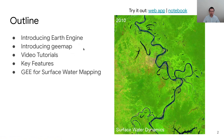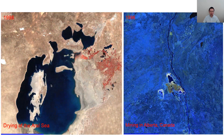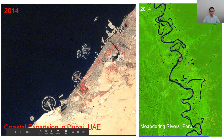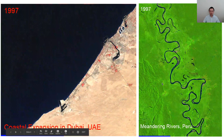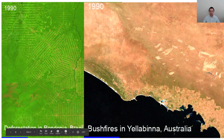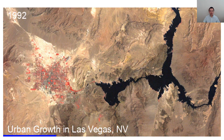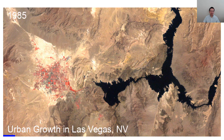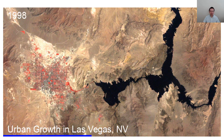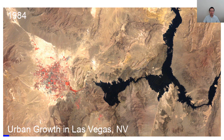Here I'm going to show you some examples. For example, this shows the drying of an oil sands mining area in Canada, coastal expansion in Dubai, meandering rivers in Peru, deforestation, bushfires, and urban growth in Las Vegas. It doesn't have to be any specific topic — it can be anything you're interested in. You can customize the spectral bands and visualization, and without writing any code you can create an animation like this within just a few seconds.